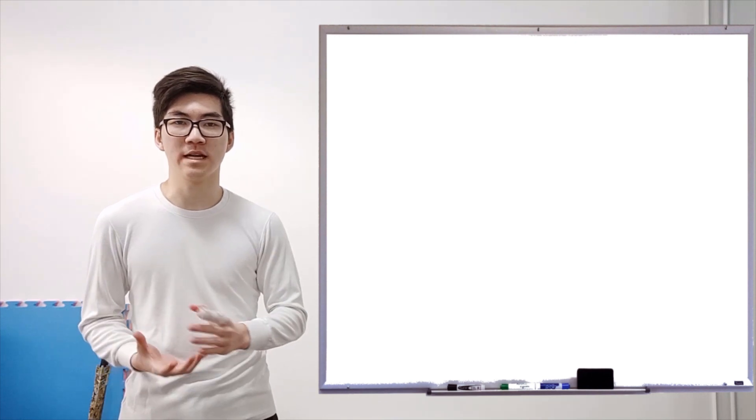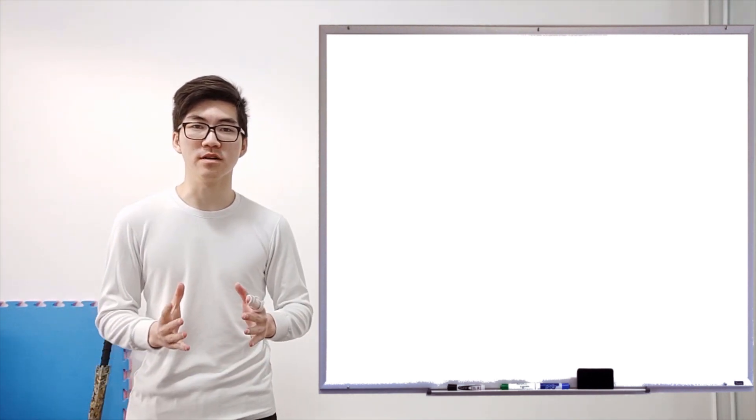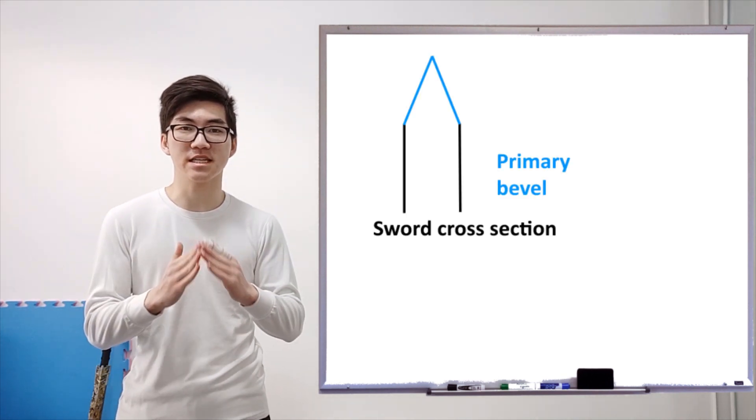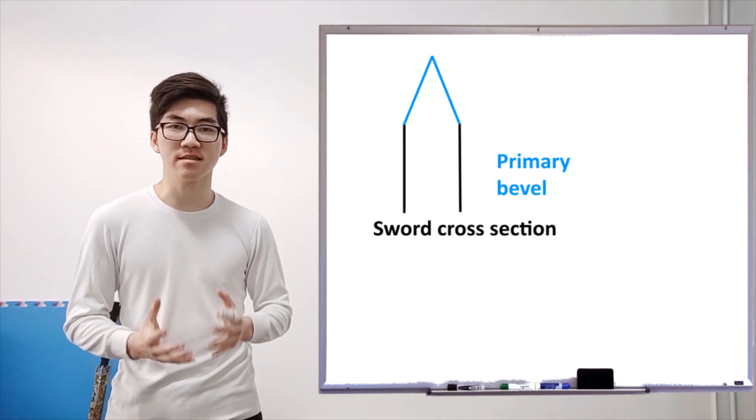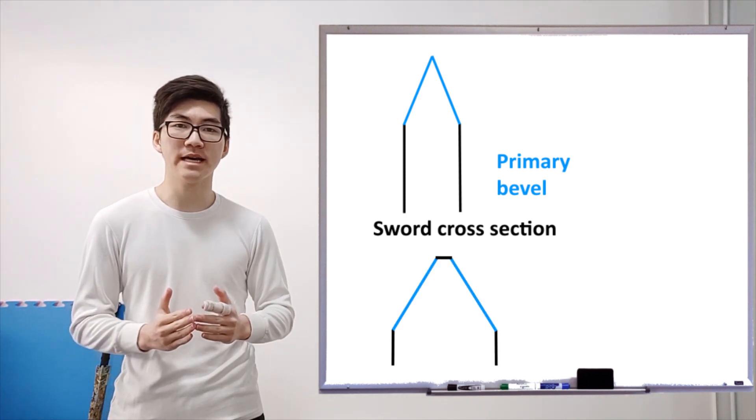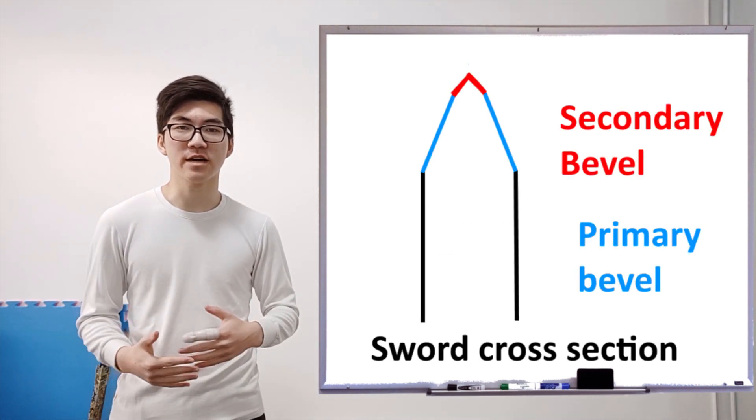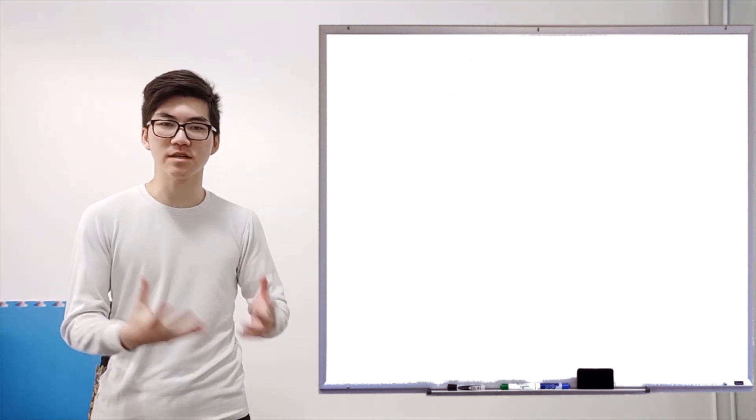Now the first question we're going to ask is, what is a secondary bevel? So if you imagine your sword and then the edge coming together, the faces coming together to create that cutting edge, then that would be your primary bevel. Now what if your primary bevel doesn't quite come to a sharp edge? Then what you can do is put a bevel on your primary bevel to create a secondary bevel so that you've got a sharp cutting edge.